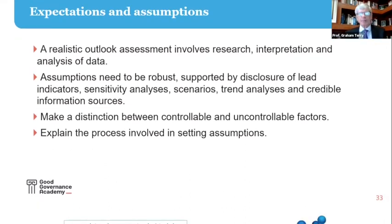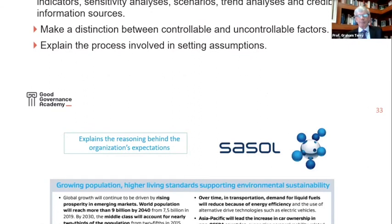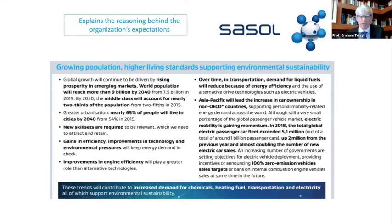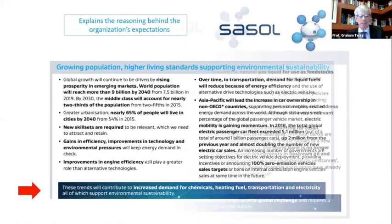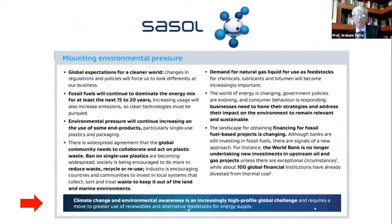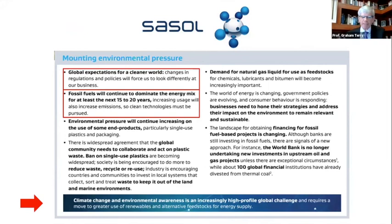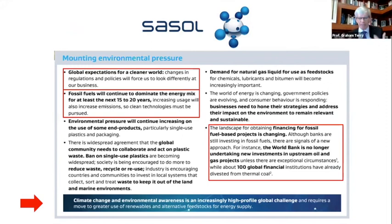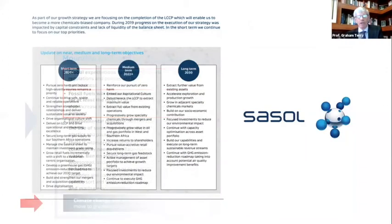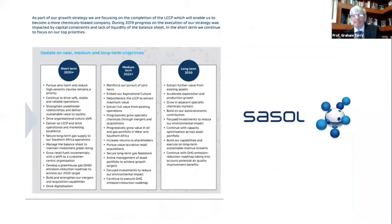Sasol is a chemical company that operates in a number of countries around the world, quoted on the Johannesburg Stock Exchange. They do this quite nicely, looking on the one hand at growing population and higher living standards, which they believe will lead to increased demand for chemicals and heating oil into the future. But then they look at the mounting environmental pressure, which is going to have an impact on the organisation. They identify the global expectations for a cleaner world and believe that fossil fuels will continue to dominate the energy mix for the next 15 to 20 years, but concede that it's going to be very difficult to get finance for that energy mix. You can then see the strategy — short, medium, and long term — and how the organisation wants to move away from fossil fuels more towards chemicals and cleaner energy going into the future.